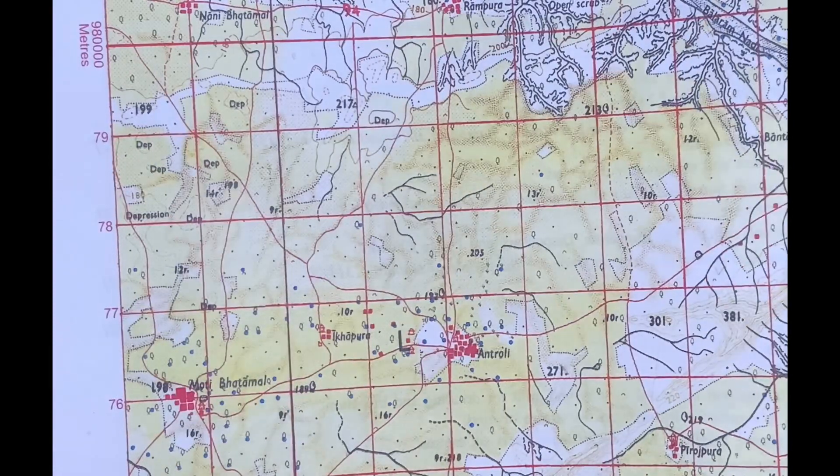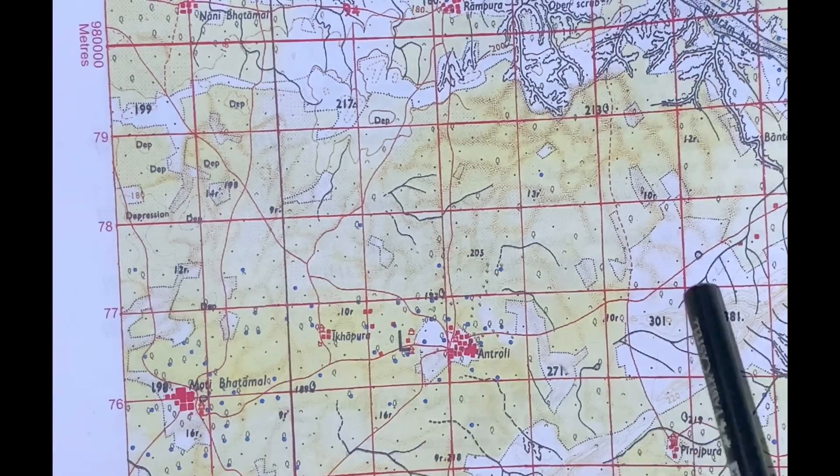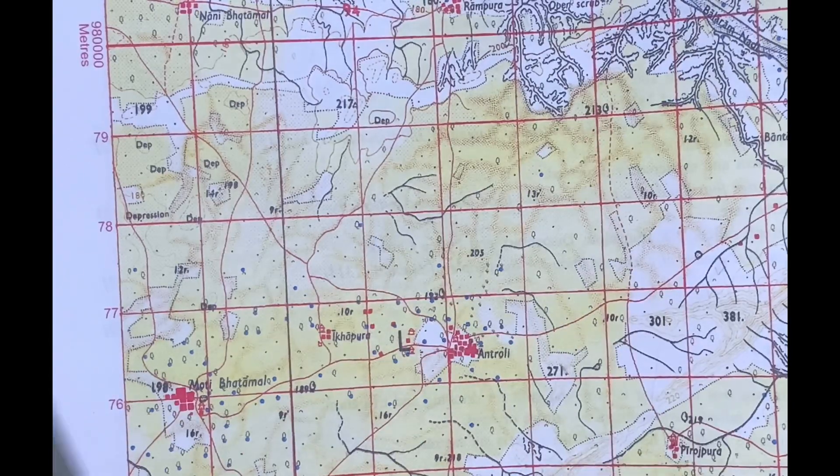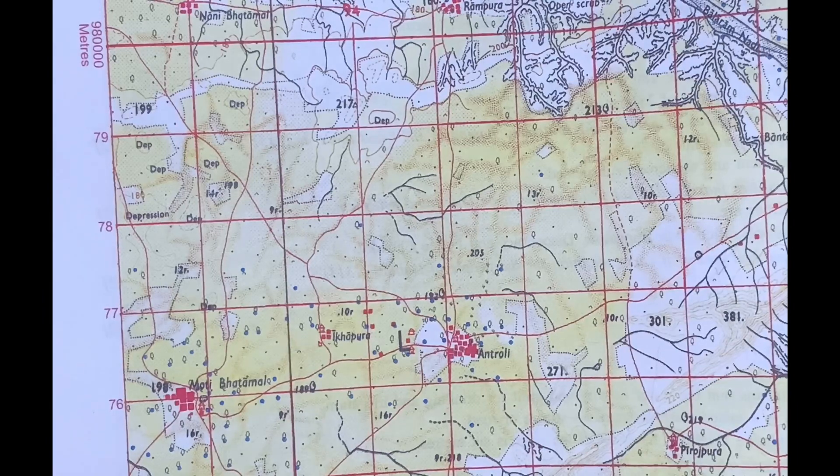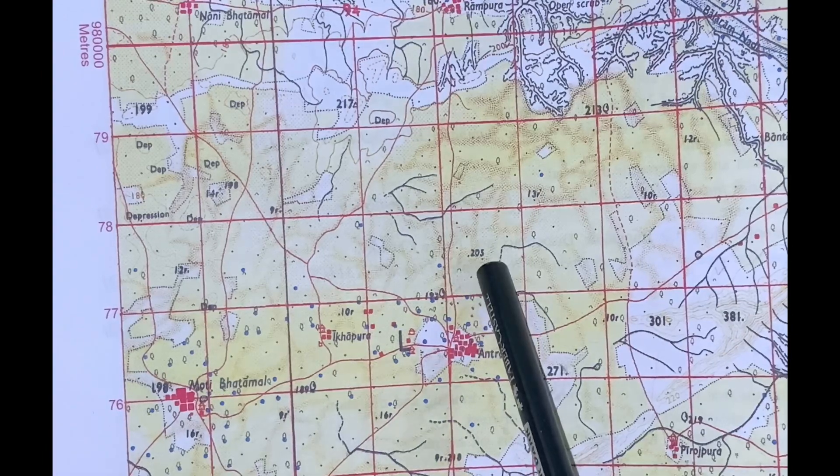Topographical maps cover all the details, all the relief features - mountains, plateaus, lowlands, desert areas, etc. in great detail. But the question is, how will we identify all these features in the topographical map?